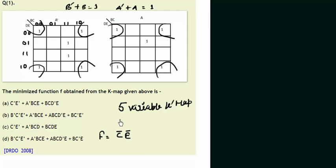So this is the result that we obtained from our first grouping in which we grouped these 8 ones. And as we very well know that when we group 8 ones, we will reduce 3 variables. And as there were 5 variables, we are left with 2.